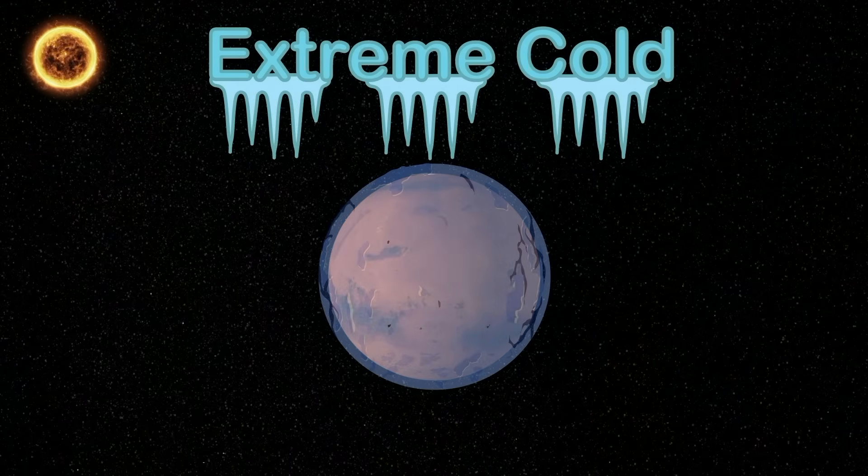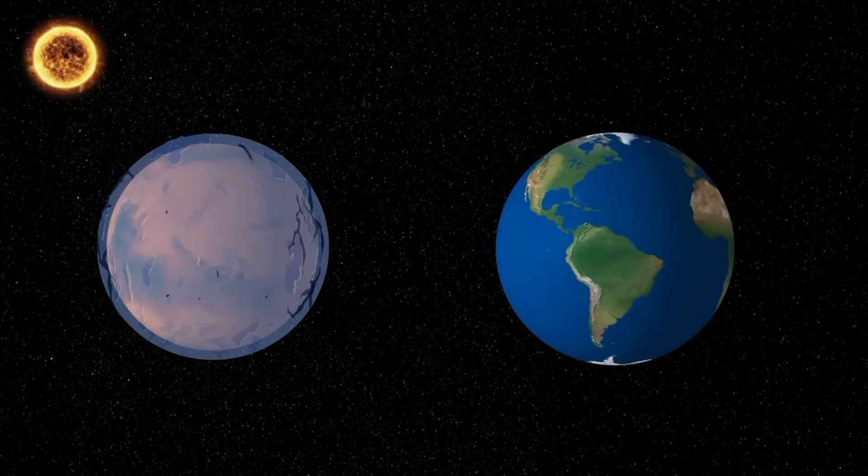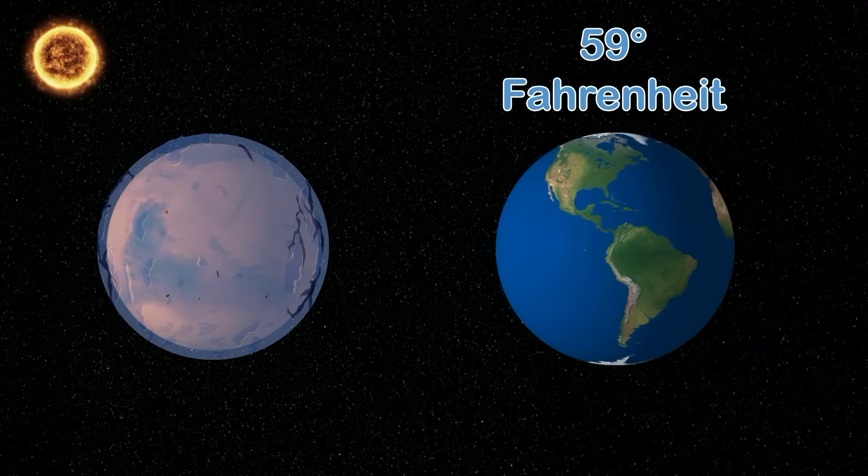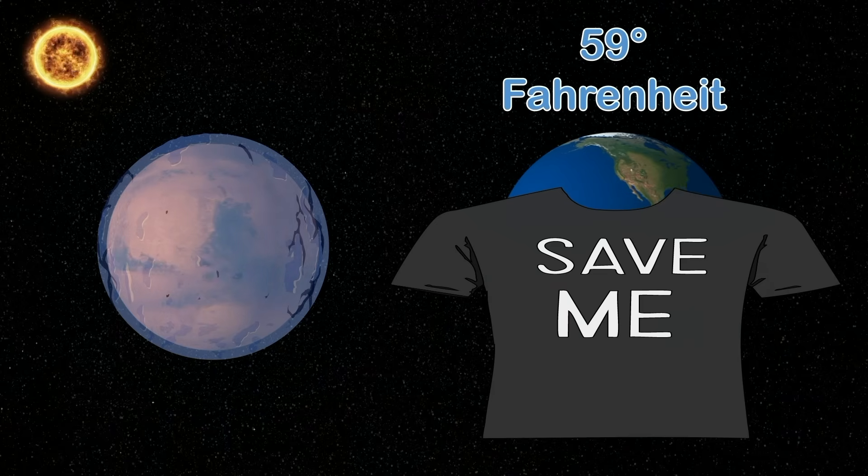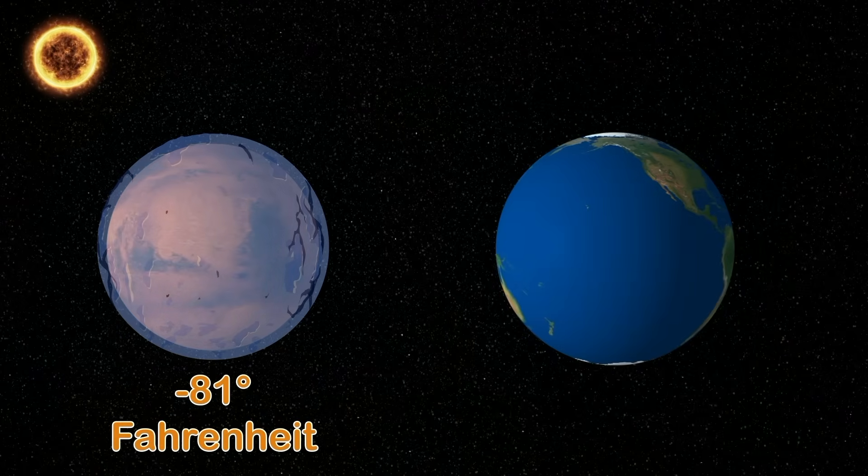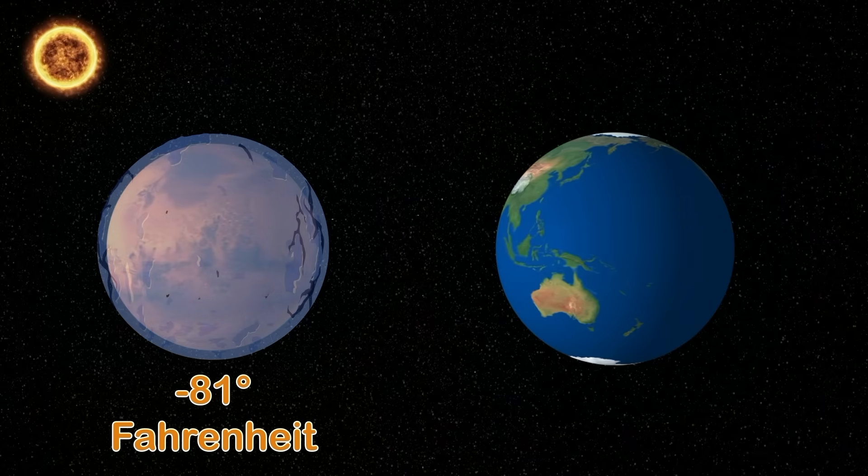The extreme cold is something you should pay close attention to. You would freeze to death immediately on Mars, it's true. Earth's average temperature is 59 degrees Fahrenheit. That's warm enough to wear a t-shirt and feel that sunlight. Negative 81 degrees Fahrenheit's the average on Mars. That's cold enough to freeze your cells on the planet and the stars.